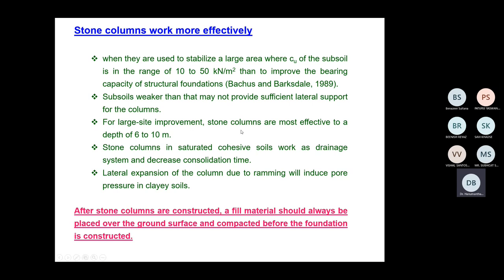For large site improvement, stone columns are most effective to a depth of 6 to 10 metres. Stone columns in saturated cohesive soils work as a drainage system and decrease consolidation time. If you are dealing with clayey soils, you reap a dual benefit: accelerated consolidation and immediate load-bearing capacity. In fine or loose sands where bearing capacity could be a problem but consolidation is not an issue, stone columns are still ideal.